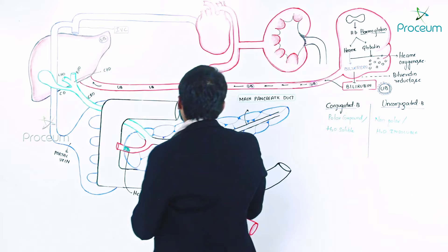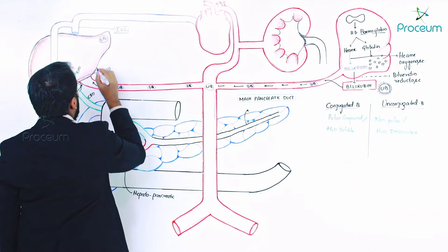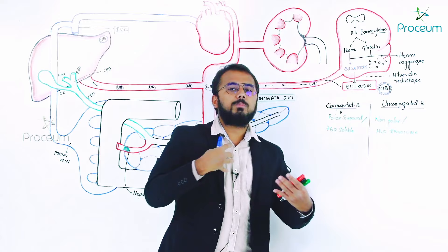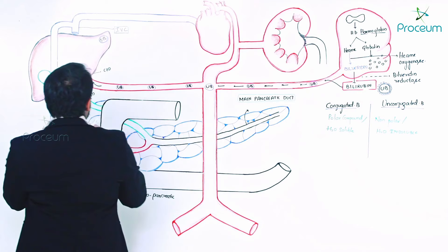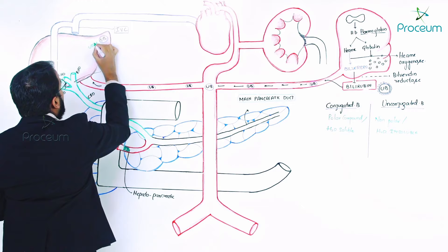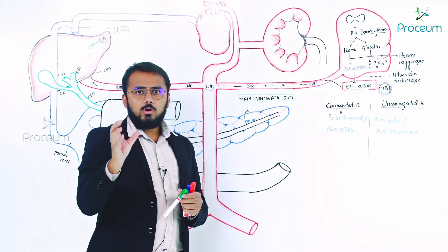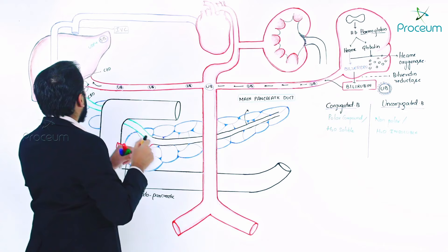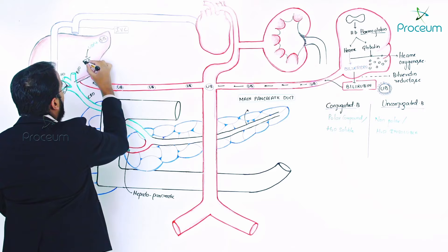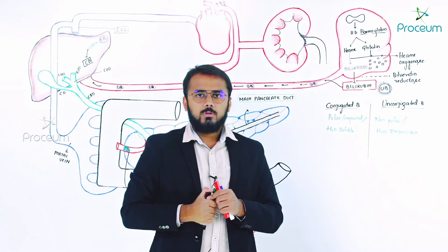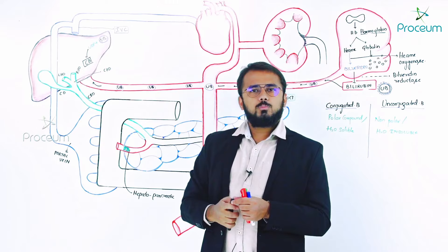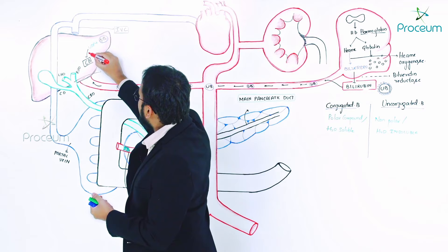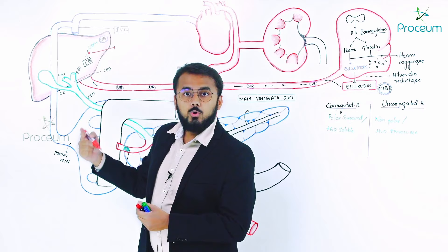In the liver, this unconjugated bilirubin undergoes conjugation — meaning it mixes with something. Unconjugated bilirubin conjugates with a special compound called UDP, which stands for uridyl diphosphate. After conjugating with UDP, the resultant molecule released is called conjugated bilirubin. Conjugation happens in the liver, and the enzyme responsible is UDP glucuronosyltransferase.